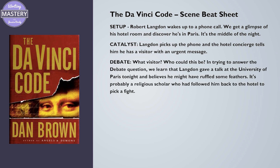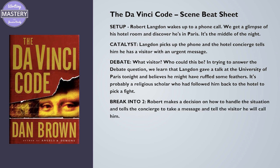Beat three: Debate. Who is this visitor? In trying to answer this debate question, we learn that Langdon gave a talk at the University of Paris tonight, and he believes he might have ruffled a few feathers — it's probably a religious scholar who followed him back to his hotel to pick a fight. Beat four: Break into Two. Robert makes a decision and tells the concierge to take a message and tell the visitor he will call him back.